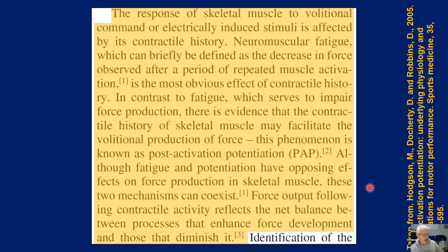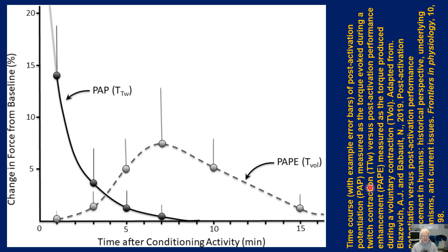Force output following contractile activity reflects the net balance between processes that enhance force development and those that diminish it. And that's the key. Post-activation potentiation — engaging the muscle in a voluntary contraction prior to the criterion exercise — is going to produce fatigue, potentially some degradation in substrate, but almost certainly fatigue of the neuromuscular system. But as we start to recover, we start to get a gain in the amount of force able to be produced in the criterion exercise. It's about understanding the relationship between fatigue and performance.